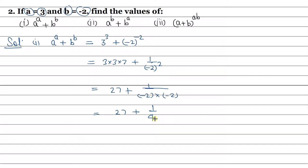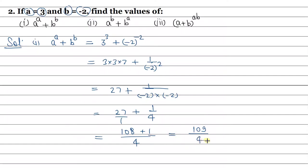Now we take the LCM, which is 4. So 4 times 27 gives 108, plus 1 upon 4 gives 109 upon 4. This is your answer for the first part.